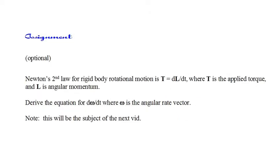The assignment is optional, and there is no program. Newton's second law for rotational motion is that the applied torque T equals the rate of change of angular momentum, dL/dt. In the next video, we'll derive the angular equations of motion for a rigid body — that is, an equation for d omega dt, the angular acceleration. The optional assignment is to give the derivation some thought. The difficulty is that Newton's laws apply in an inertial frame, and in an inertial frame the moment of inertia matrix is constantly changing if omega is non-zero. How can that problem be overcome?